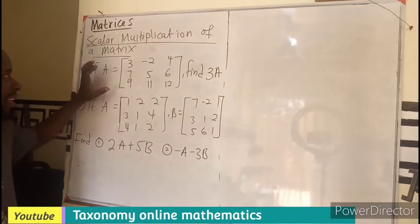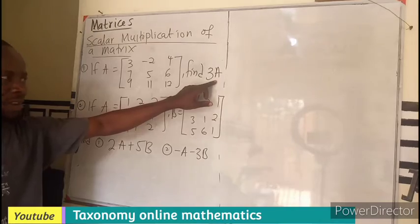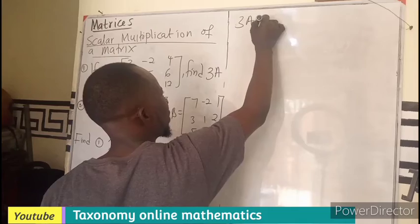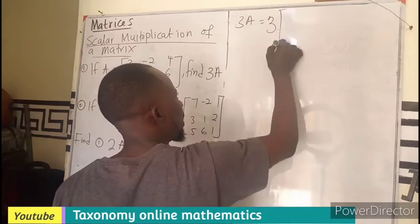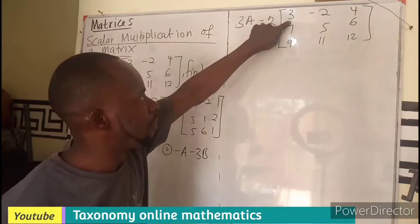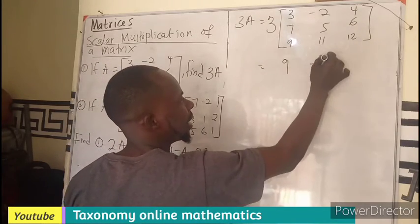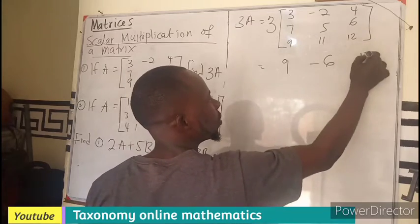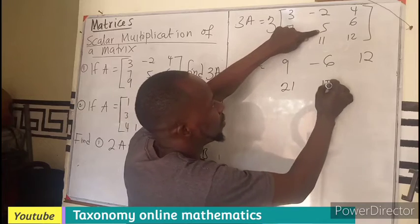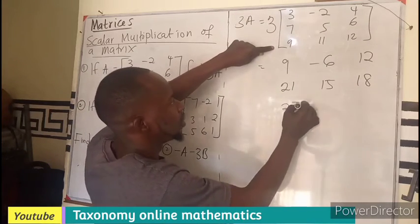So vector A is 3 by 3. You have to find 3A, meaning if I'm going to find 3 times A, 3 is going to multiply. So 3 times this will give you [9, -6, 12; 21; 15, 18, 27].